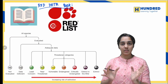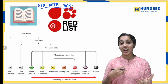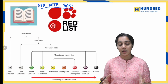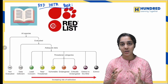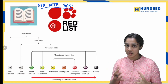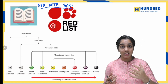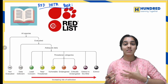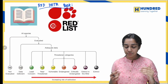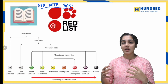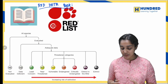Biodiversity is the variability of species — the variety of species or species richness in an ecosystem, whether terrestrial, aquatic, or marine. The Red Data Book lists endangered species, extinct species, and species facing risk, indicating biodiversity loss.